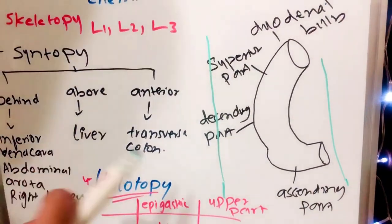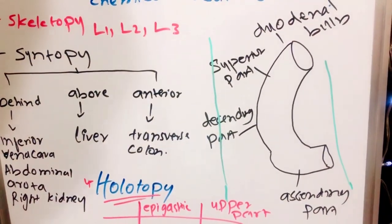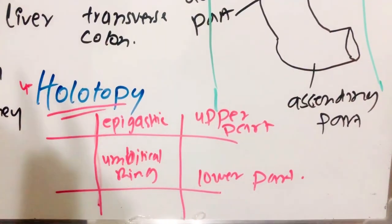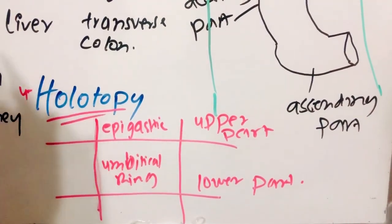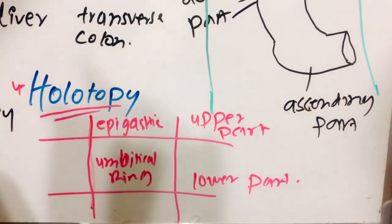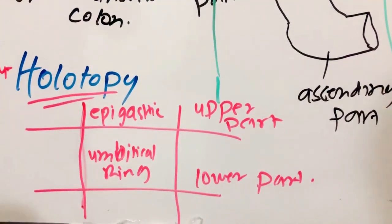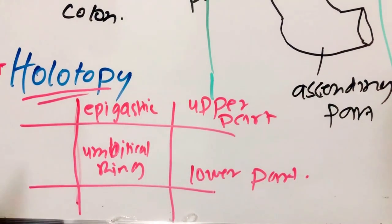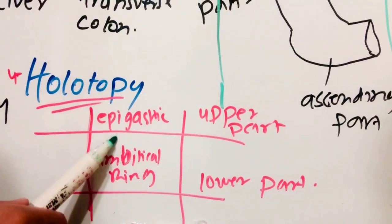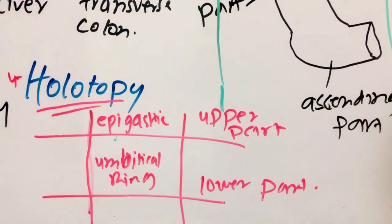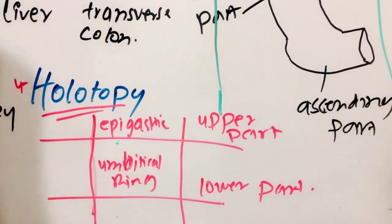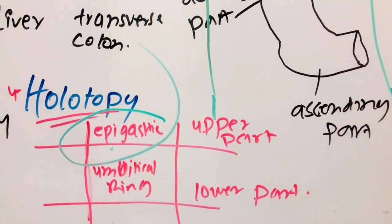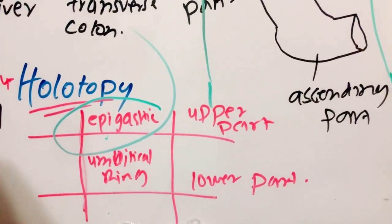Now we will talk about the holotopy. Holotopy is the relation of the duodenum as a whole to the body. The upper part of the duodenum lies in the epigastric region, and the lower part of the duodenum lies in the umbilical region.